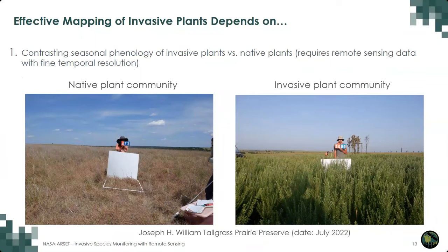Here is one example. On the left side you're looking at a native plant community; on the right side, an invasive plant community. Both are from the same site, only a mile or two apart, and the pictures were taken only a couple of days apart. But as you can see, the native plant community is completely senesced, while the invasive plant community is photosynthetically active and very green. If you can identify this time window and collect remotely sensed data during it, mapping the invasive plants will be way easier. But the tricky point is that this optimal time window can vary from year to year.